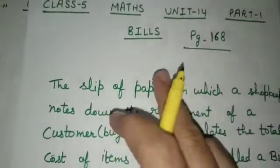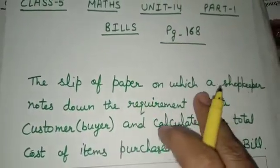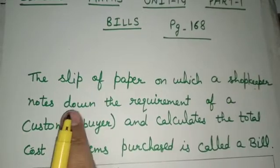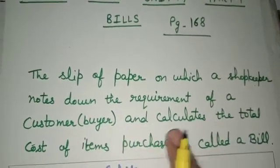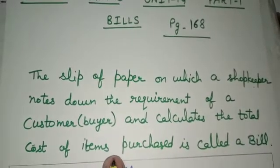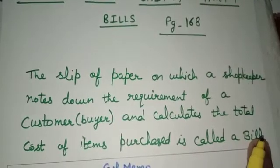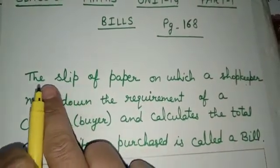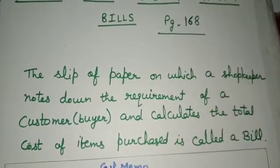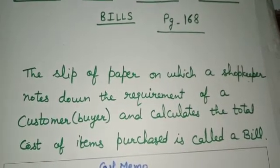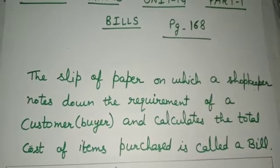Here also the same thing is a bill. The slip of paper on which a shopkeeper notes down the requirement of a customer or a buyer and calculates the total cost of items purchased is called a bill.